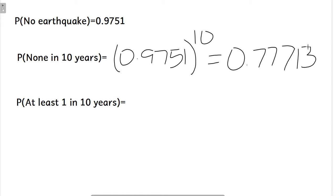Okay, so let's think about this. If there's none in 10 years, we have the probability. So the probability that there's at least 1 in 10 years has to be 1 minus that, right? So the probability that there's at least 1 is 1 minus the probability that there's none.